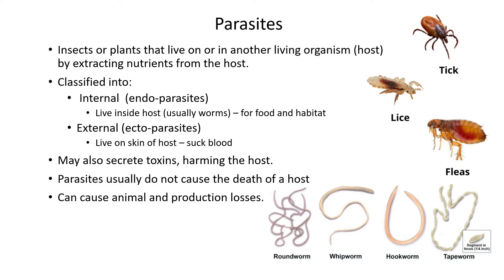Parasites are classified as either internal or external. Internal parasites are also known as endoparasites — 'endo' means inside — while 'ecto' is for outside. Endoparasites are usually things like worms that live literally inside the animal, in the intestines or other organs. A couple of internal parasites in worm form include roundworms, whipworms, hookworms, and tapeworms.